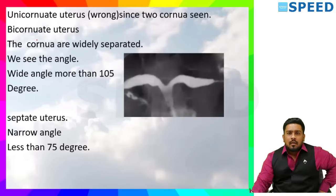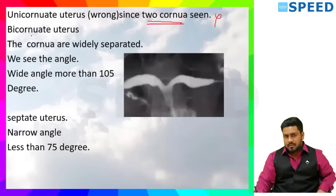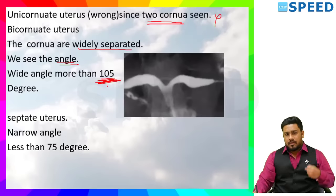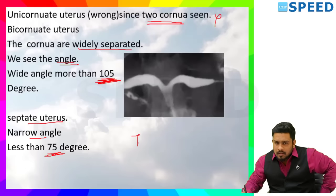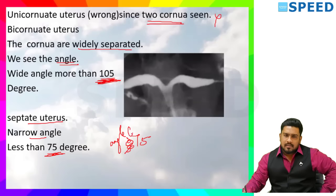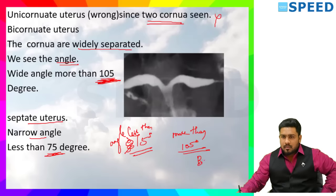Unicornuate uterus — since two cornua are seen, it is not the case. The difference between bicornuate and septate uterus: in bicornuate the cornua are widely separated — the angle is wide, more than 105 degrees. In septate uterus the angle will be narrow, less than 75 degrees. Friends, remember: angle less than 75 degrees — think of septate uterus; more than 105 degrees — think of bicornuate uterus.